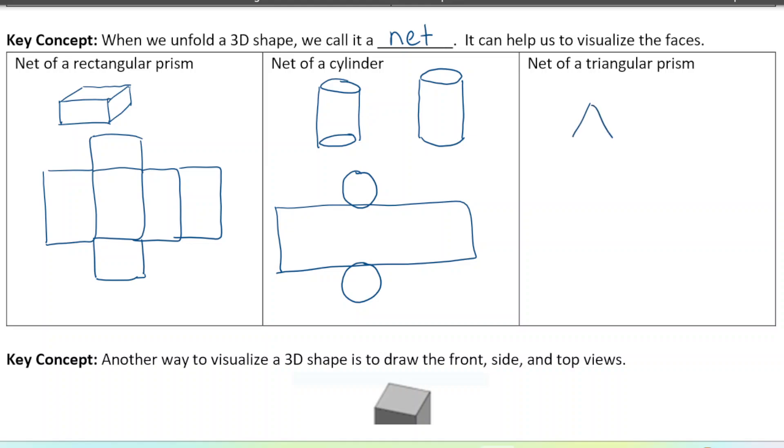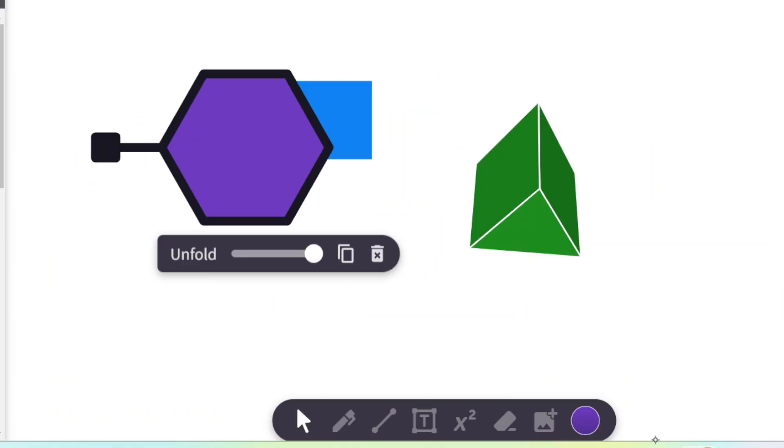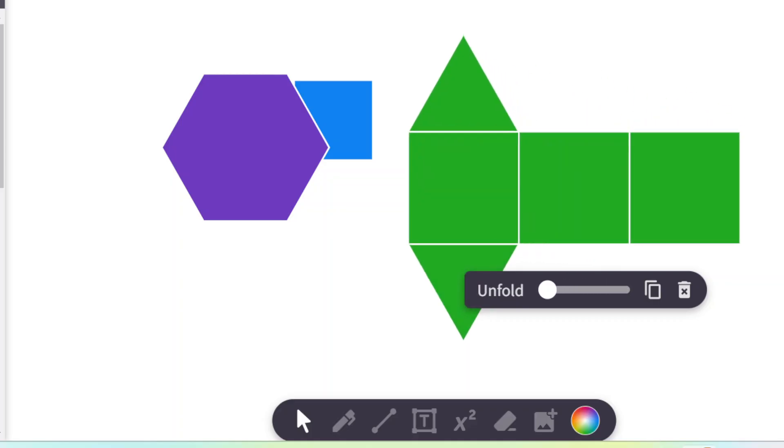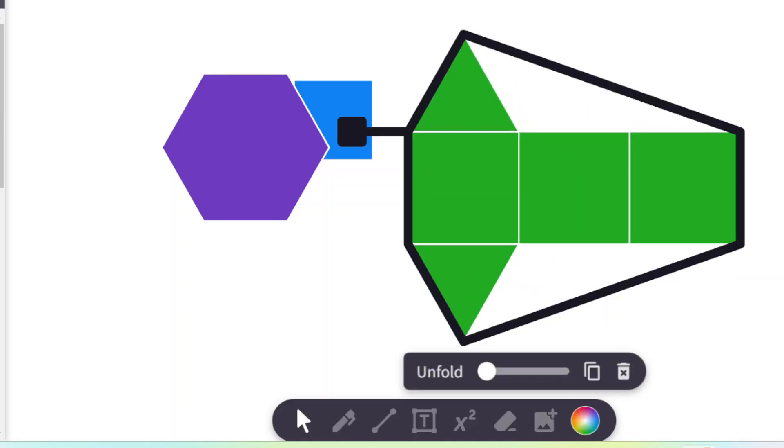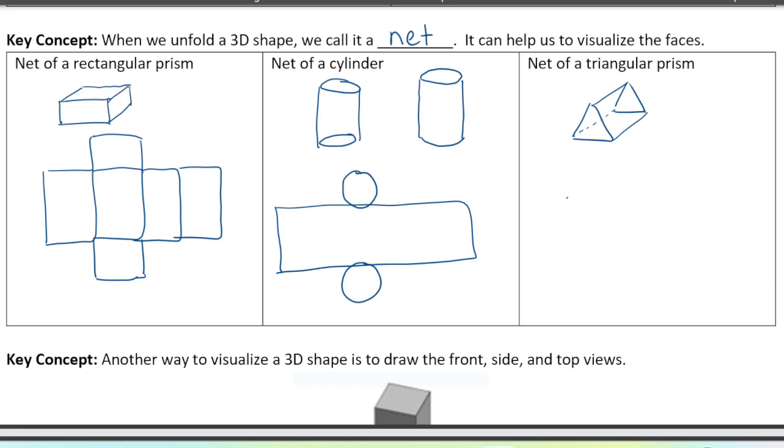Okay. A triangular prism. Again, we want to draw, if we want to draw it, we draw two triangles offset from each other and then just connect the corners. Okay. We can draw it like that. And then what we have here, remember from our animation, right? We had three rectangles and two triangles. So we have two triangles and then three rectangles in between.